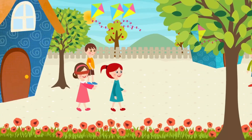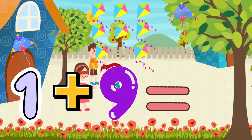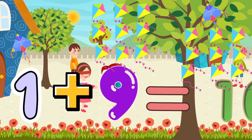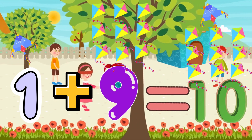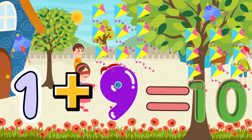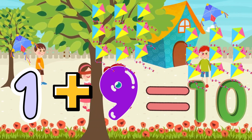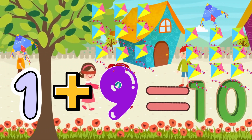1 plus 9 equals 10. 1 kite plus 9 kites equals 10 kites flying in the sky.